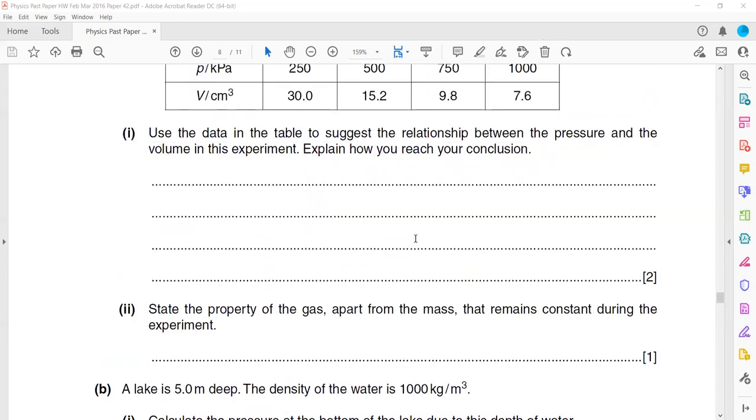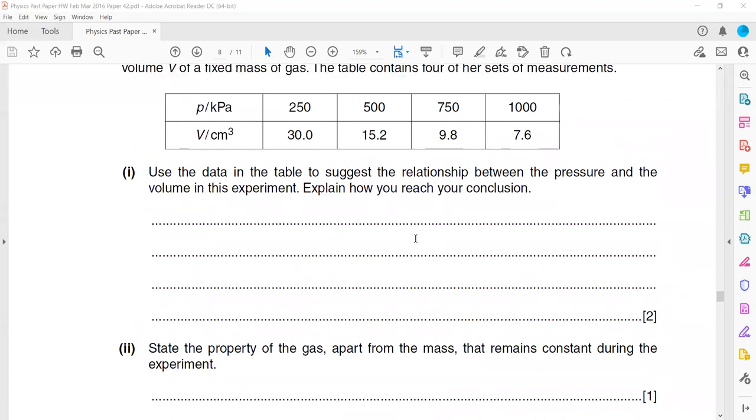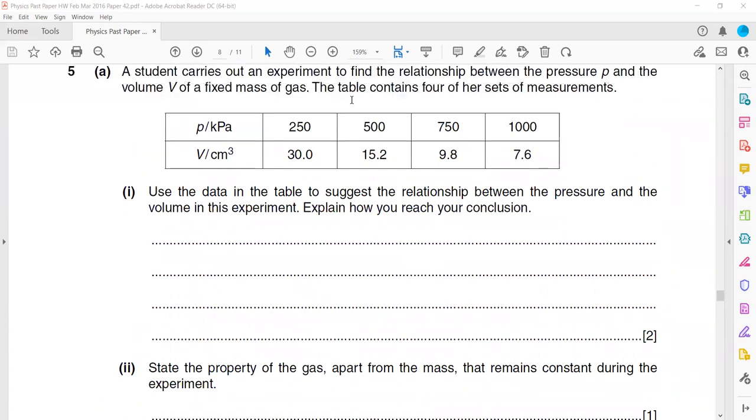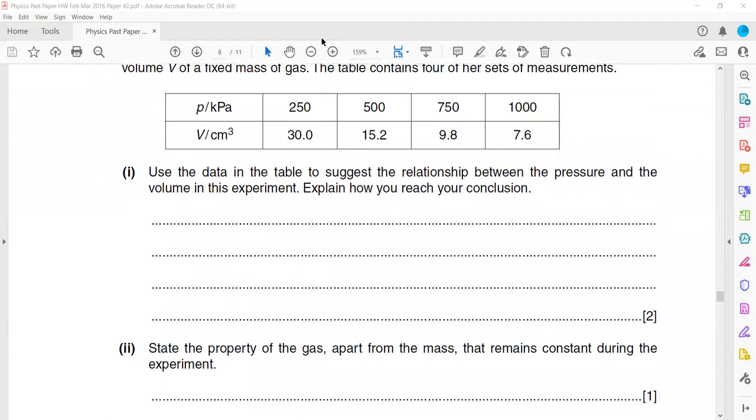Then state the property of a gas, apart from mass, that remains constant for the experiment. So whenever we are finding a relation between pressure and volume, we should keep temperature constant because temperature can also affect the volume and pressure. So temperature must be constant. By changing the pressure, the volume will change, so we must keep the temperature constant as it can also affect the volume.